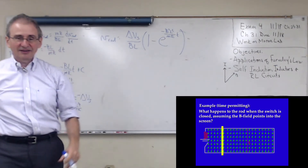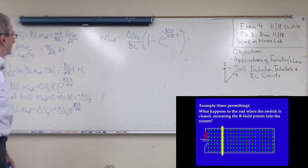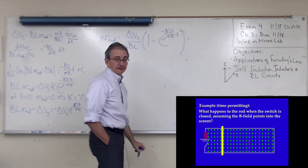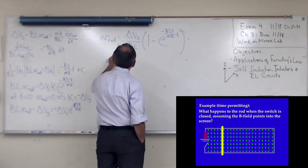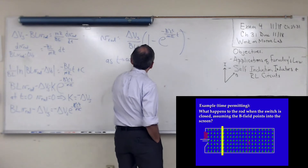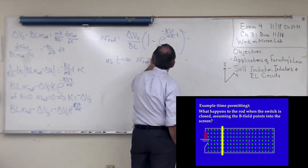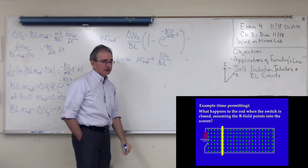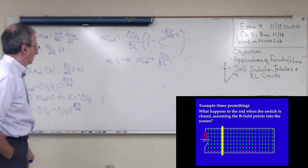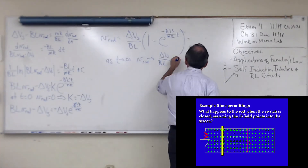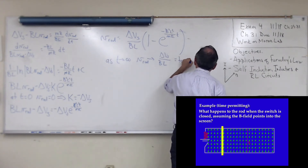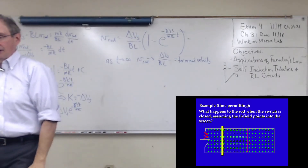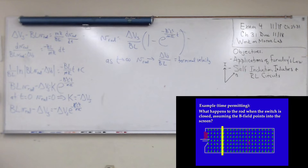What happens as T goes to infinity? The exponential term goes to zero, so V_rod equals ΔV_s/(BL), which is the terminal velocity. That occurs when the current delivered by the power supply equals the induced current.